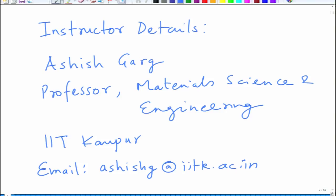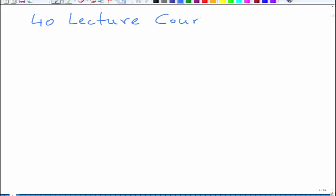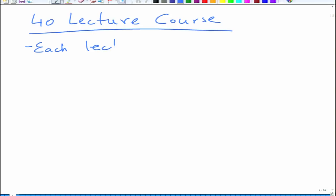You will have weekly assignments on various topics, after which you will have exams. This course is basically a forty-lecture course, each lecture approximately thirty minutes. You will have eight weeks, and over these eight weeks we will cover various aspects of solar photovoltaics. In the first week, we will discuss basically introduction to solar cells and introduction to the area. Then we will talk about solar radiation.